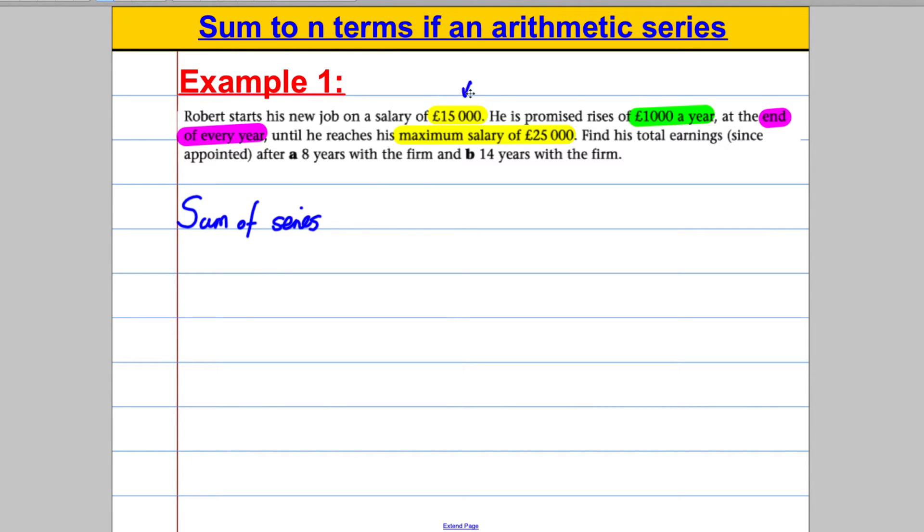They've given us a starting salary, the first term in the series, which is a. They've given us what the salary goes up by every year, which is d. So a is £15,000 and d is equal to £1,000. They have told us that the maximum salary, so the maximum salary you can ever get, the last term of the sequence, is £25,000.